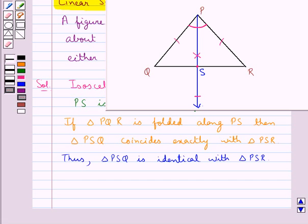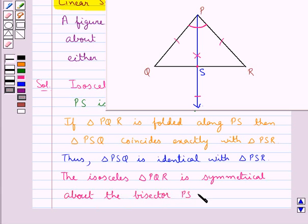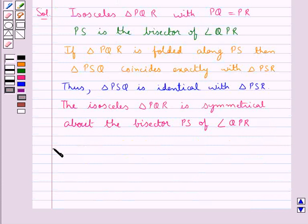So we say the isosceles triangle PQR is symmetrical about the bisector PS of the angle QPR, which is the angle included between the equal sides of the isosceles triangle. So this completes the session.